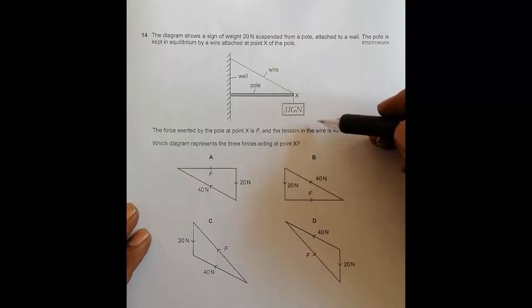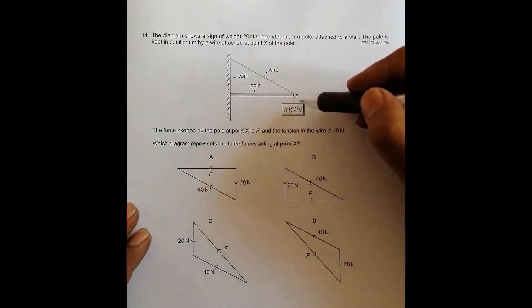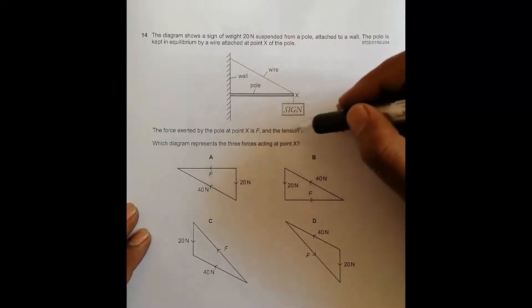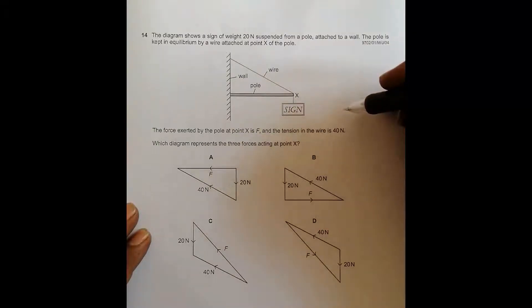The force exerted by the pole at point X is F, and the tension in the wire is 40 Newton. Which diagram represents the three forces acting at point X? We have to find which diagram represents the forces at point X.